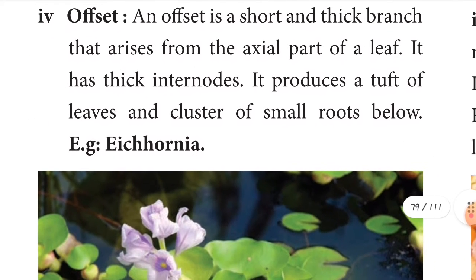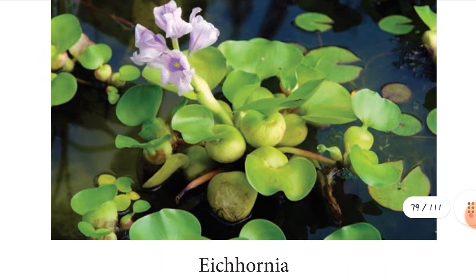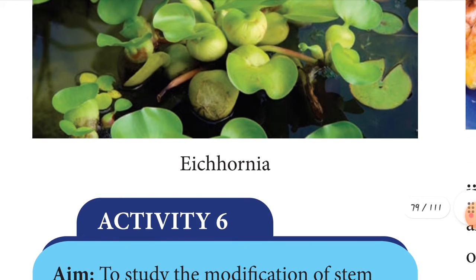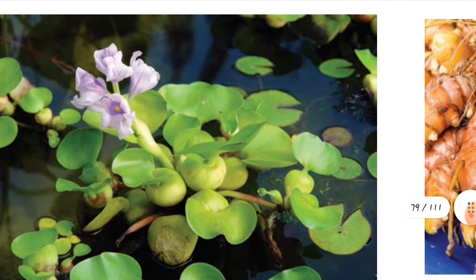The fourth type is the offset. Here the axial part of the leaf has thick internodes and it produces a tuft of leaves and a cluster of small roots below. Example: Eichhornia. See the violet color flower children.